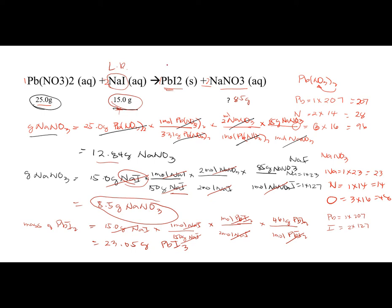Given our limiting reagent sodium iodide, the amount of lead(II) iodide formed is 23.05 grams, and the amount of sodium nitrate formed is 8.5 grams.